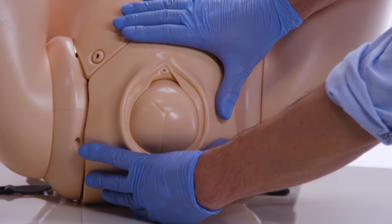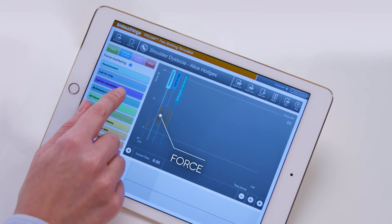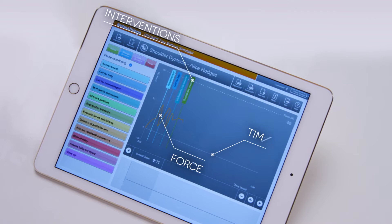The three main parameters measured through the software during training are force applied to the baby's head, interventions made during delivery, and time taken to deliver the baby.